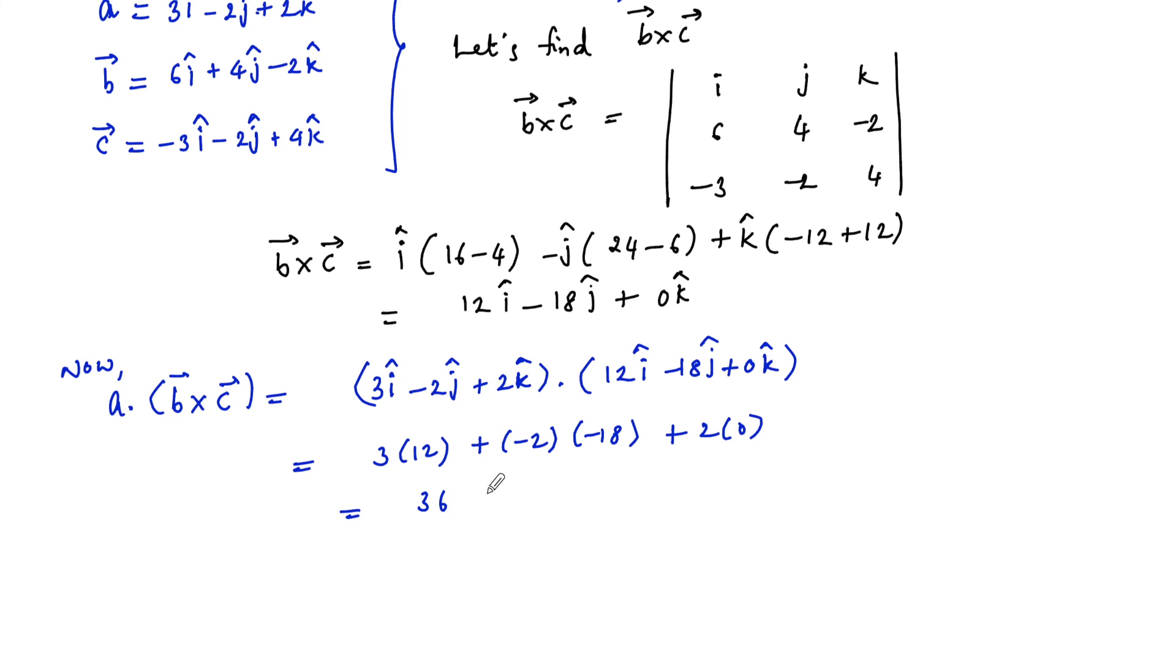3 times 12 is 36, and minus 2 times minus 18 is plus 36, plus 0, which equals 72. Therefore, a dot b cross c for the given vectors is 72.